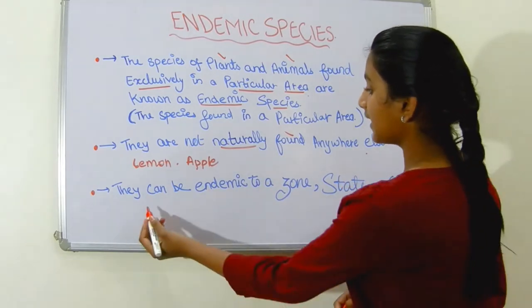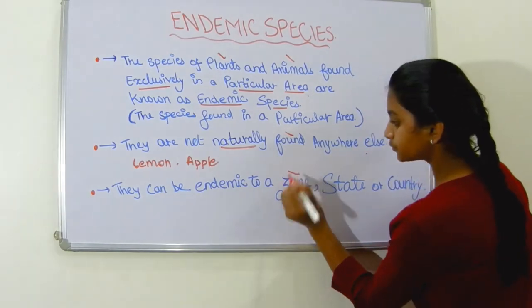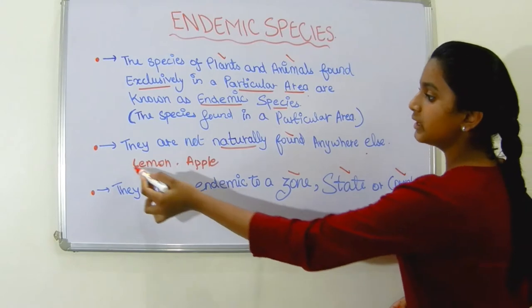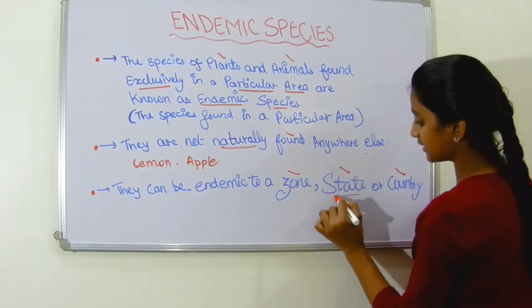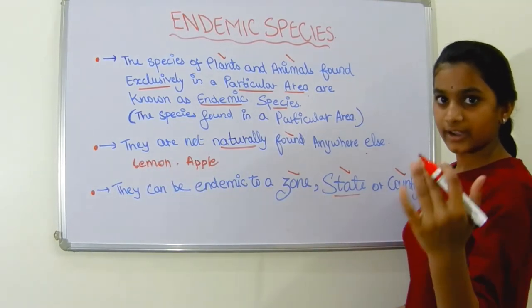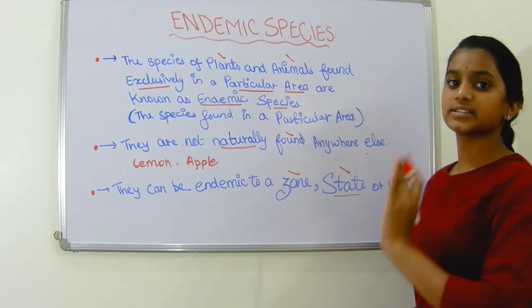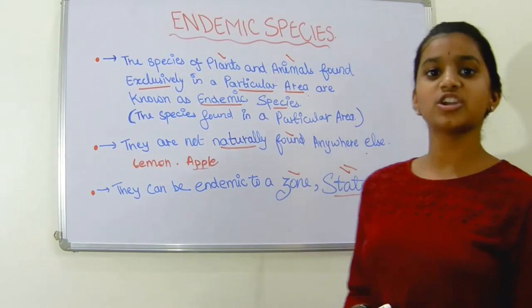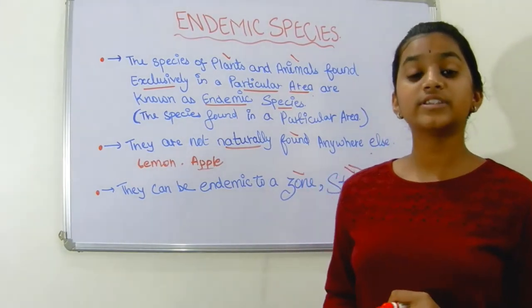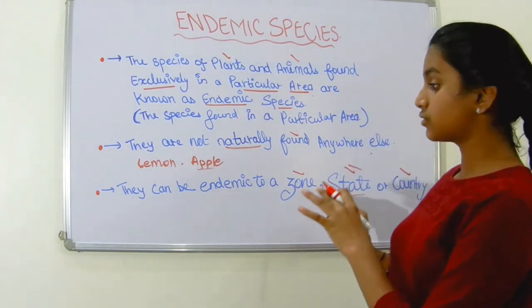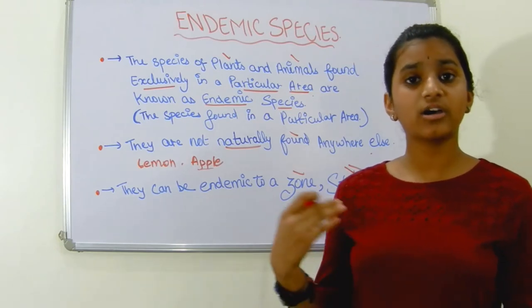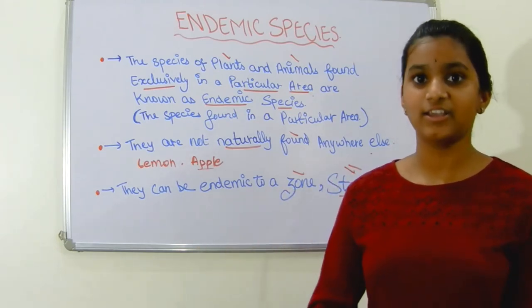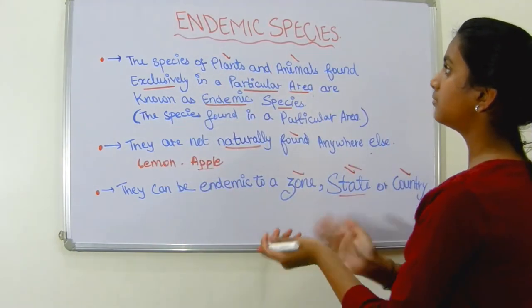So they can be endemic to a zone, a state, or a country. According to this example, lemon is endemic to a state — North Karnataka. Karnataka is a state and North Karnataka is endemic to that state. And apple is also endemic to a state, which is Shimla. So an animal or a plant can be endemic to a zone, place, country — anything. So this is all about endemic species.